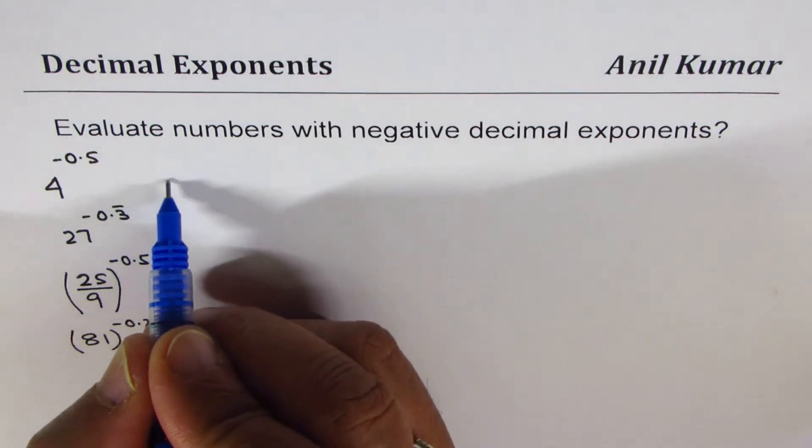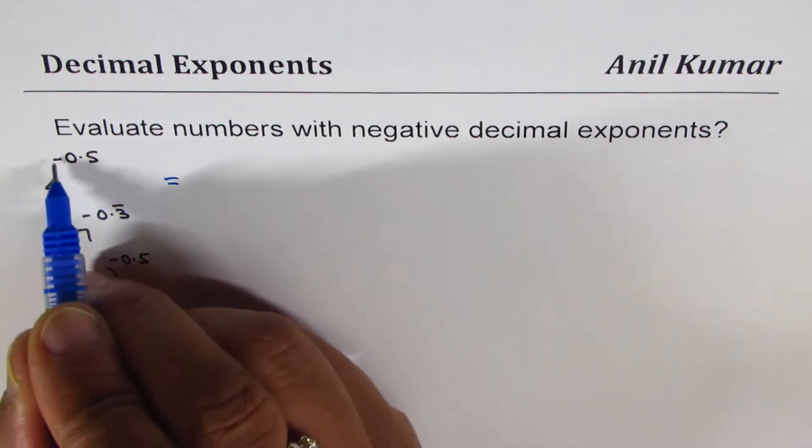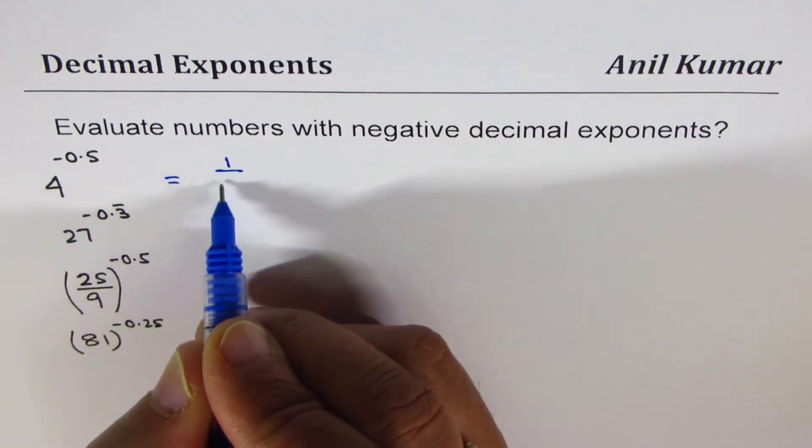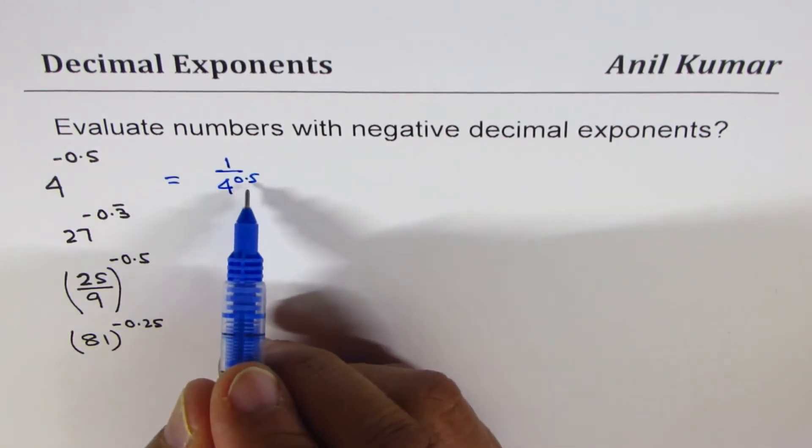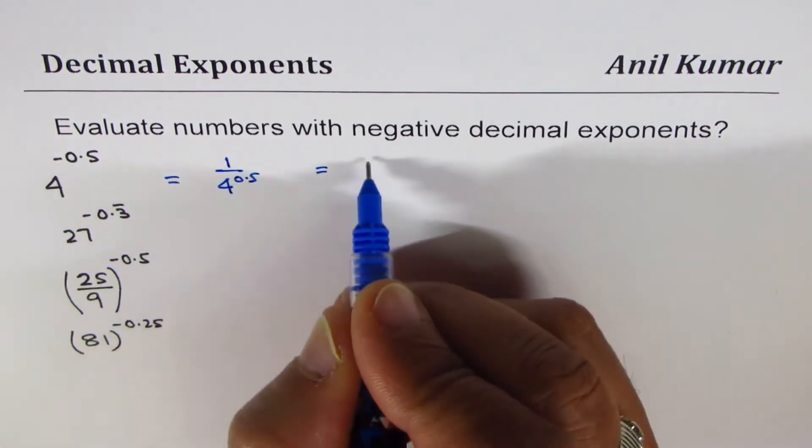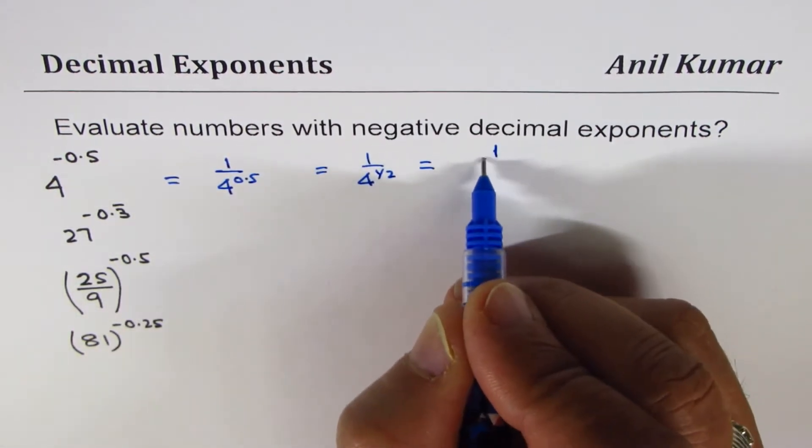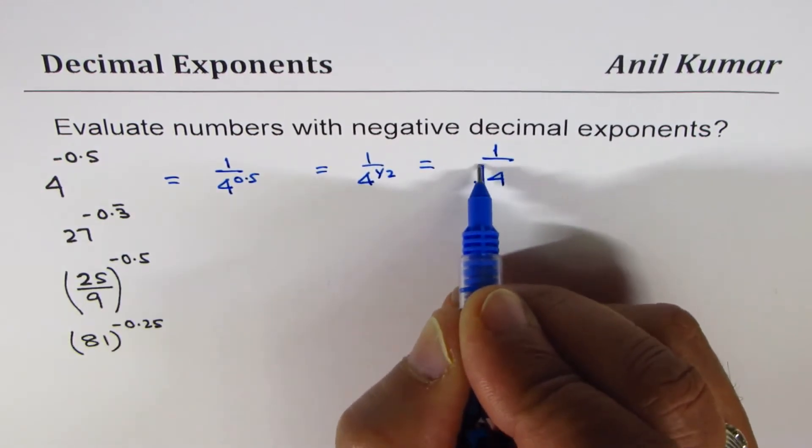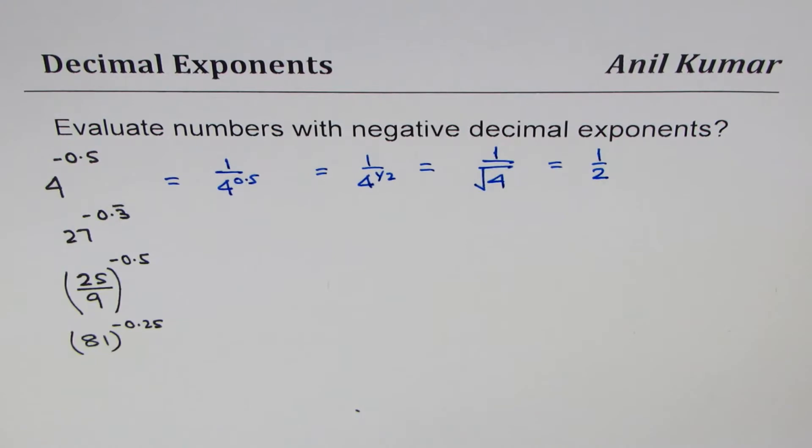Now let's take the first one, which is 4 to the power of minus 0.5. It really means reciprocal, so we get 1 over 4 to the power of 0.5. 0.5 is half, so this is 1 over square root of 4, which gives you 1 over 2 as the answer.